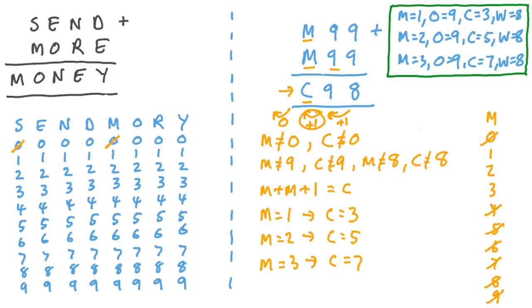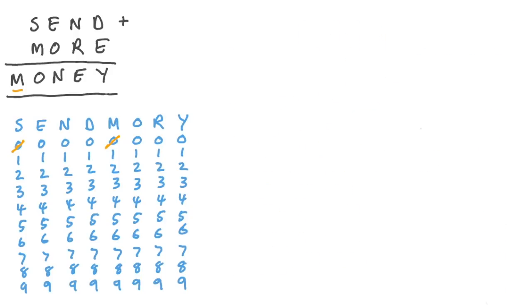Now back to our main event, send plus more equals money. Well, the answer has got an extra digit and the maximum that can be carried over when adding two numbers is 1. So we know m is equal to 1 and none of the other letters are equal to 1. So we can cross those off. But we also know that m is not equal to any of the other digits. So we can cross those off too. And we can start mapping out those answers in a little grid. We've got a 1 here and here.